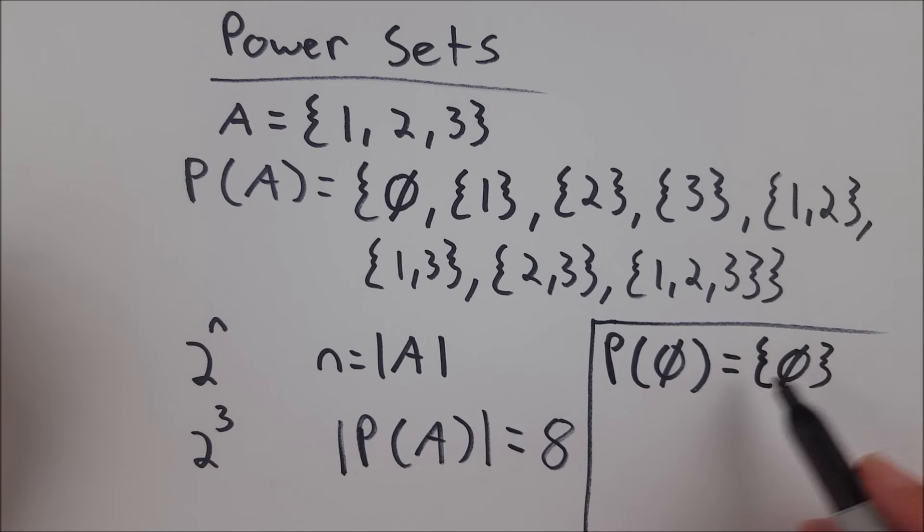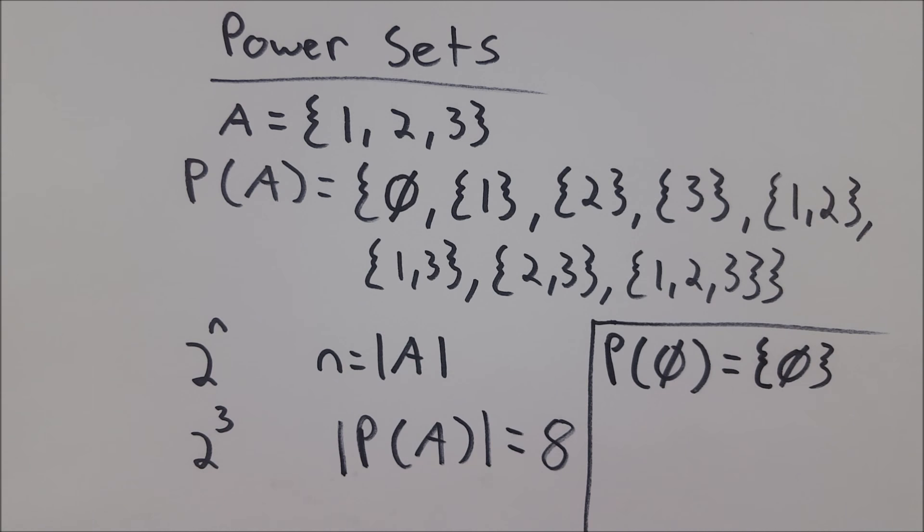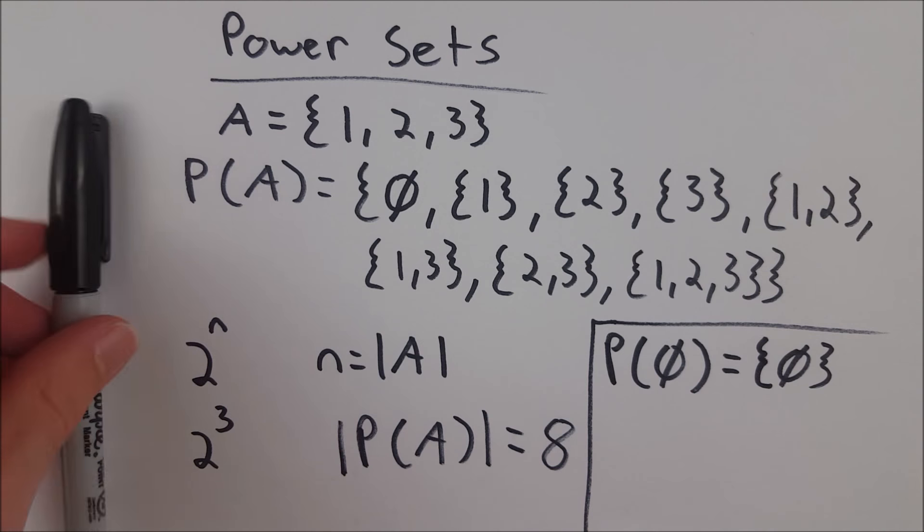Because the only subset of the empty set is the empty set. Therefore, the power set of the empty set is the set containing the empty set, which is again, the set containing all subsets of the given set.